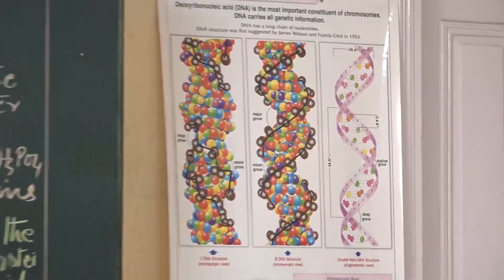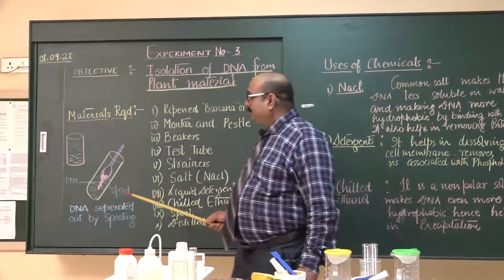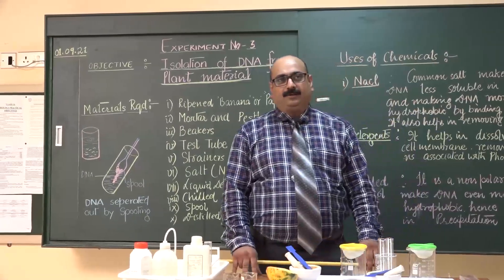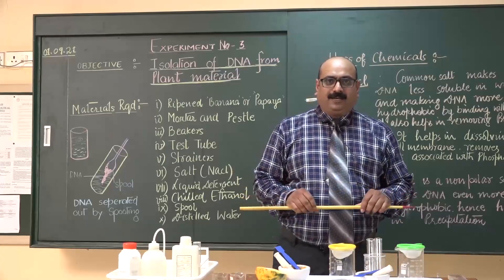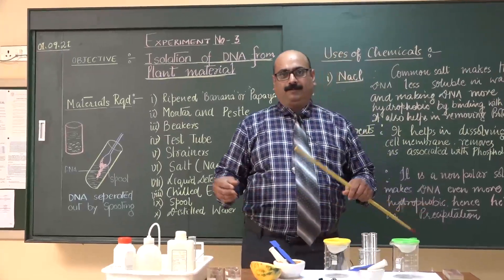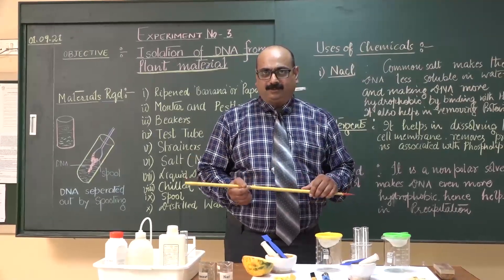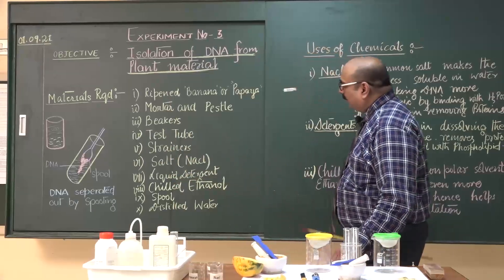Now, the main objective of this experiment is to isolate DNA from plant material. As we know in biotechnology experiment, we cannot make recombinant DNA without taking out DNA. So, we first understand how to take out DNA.